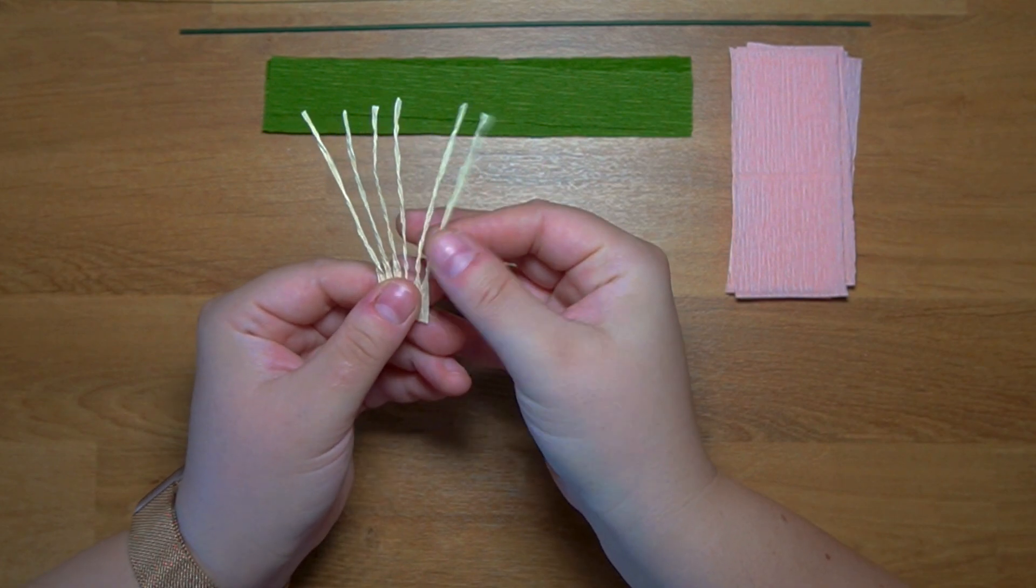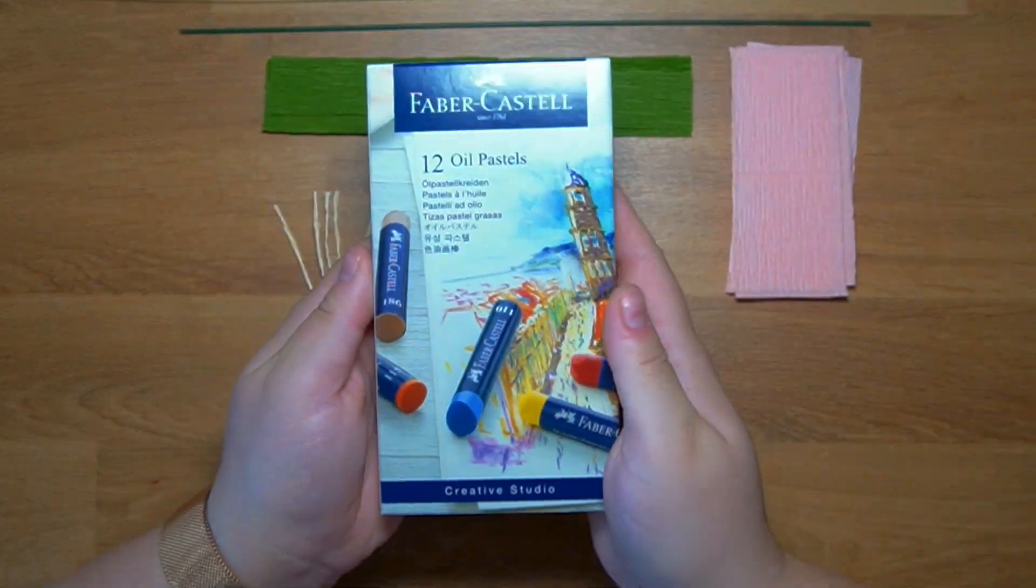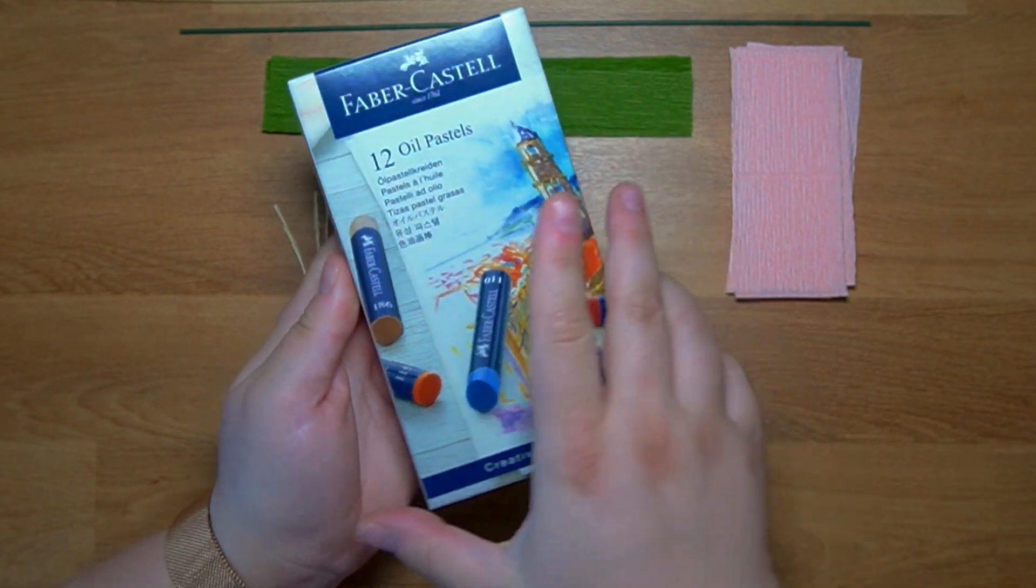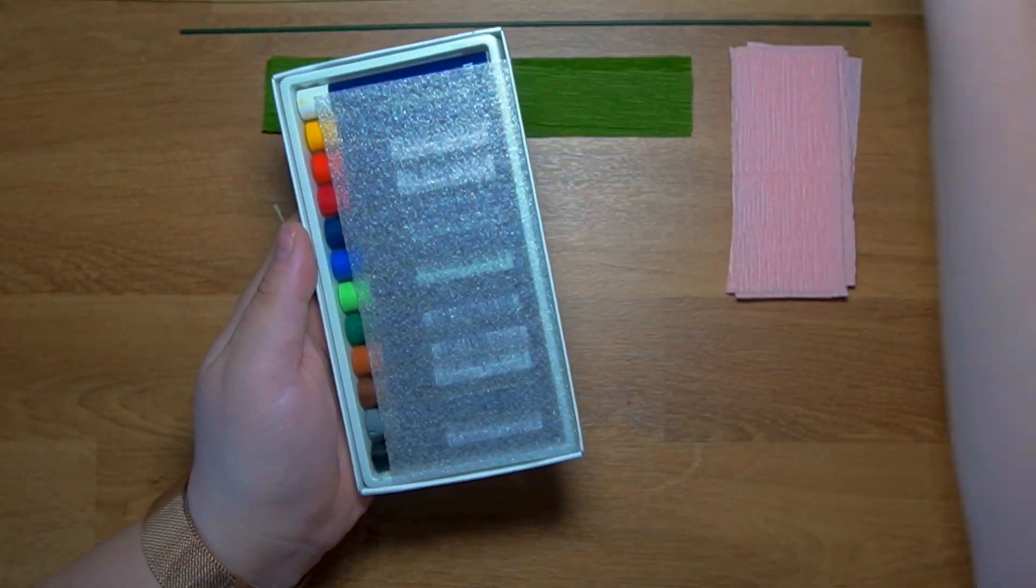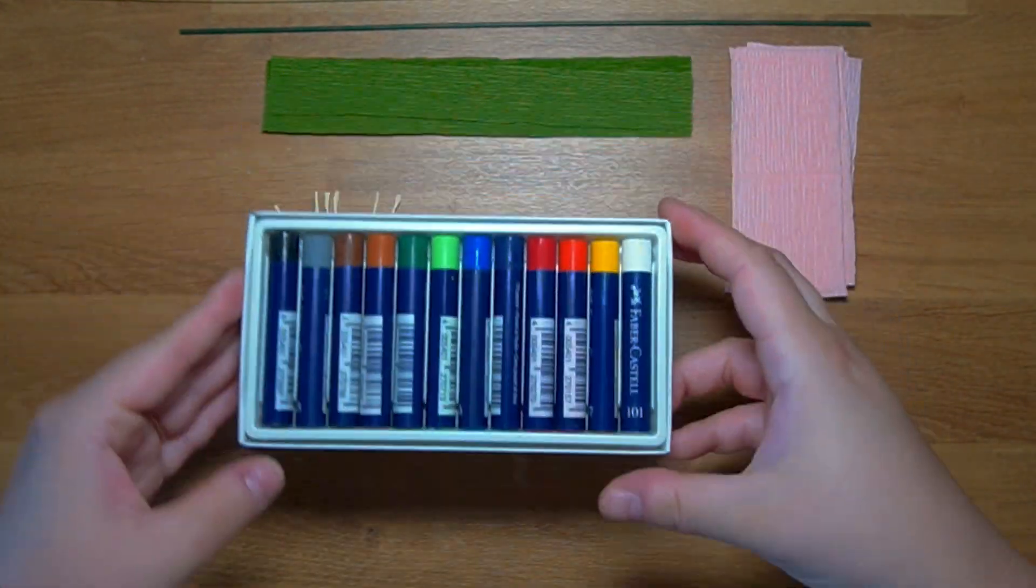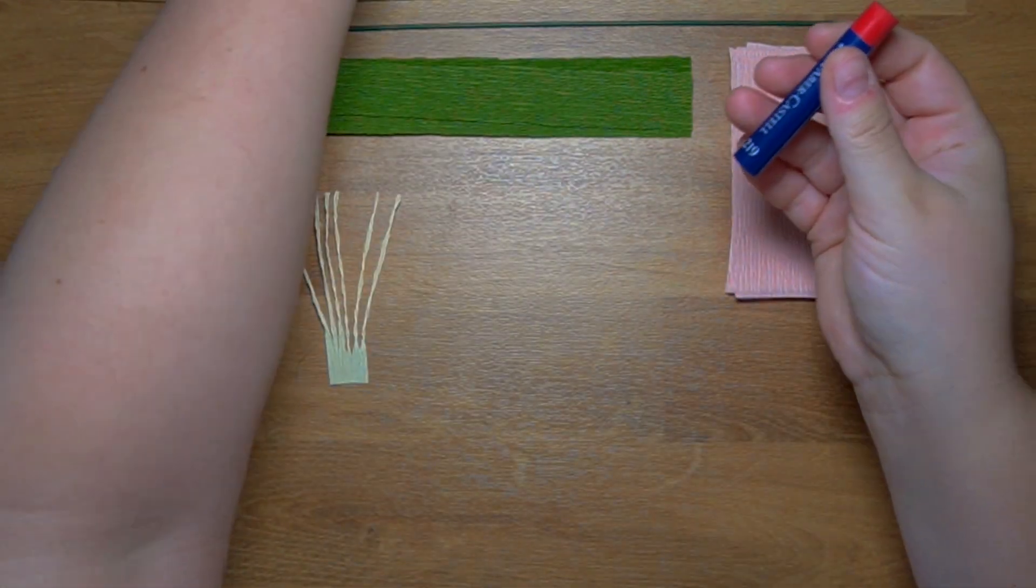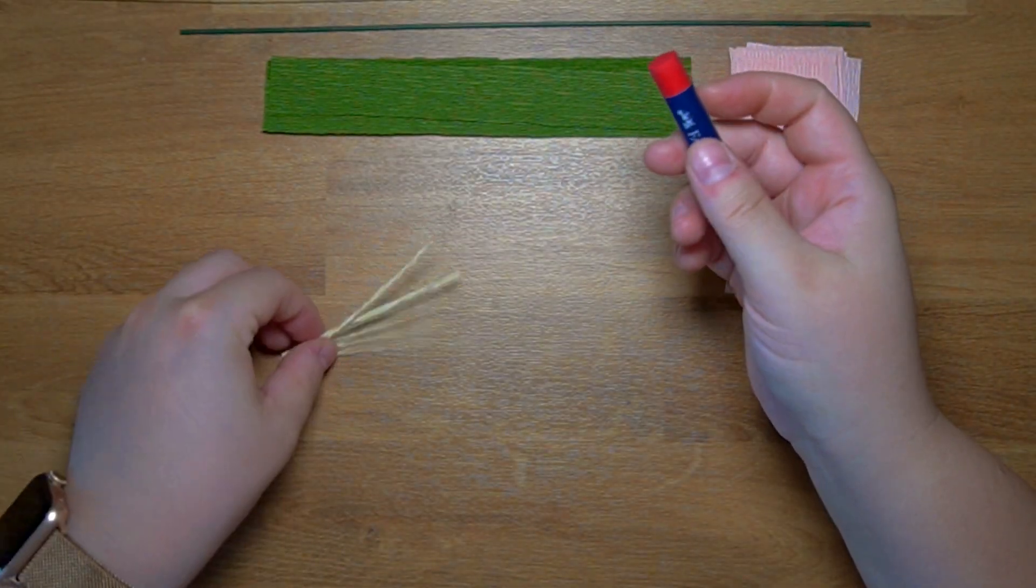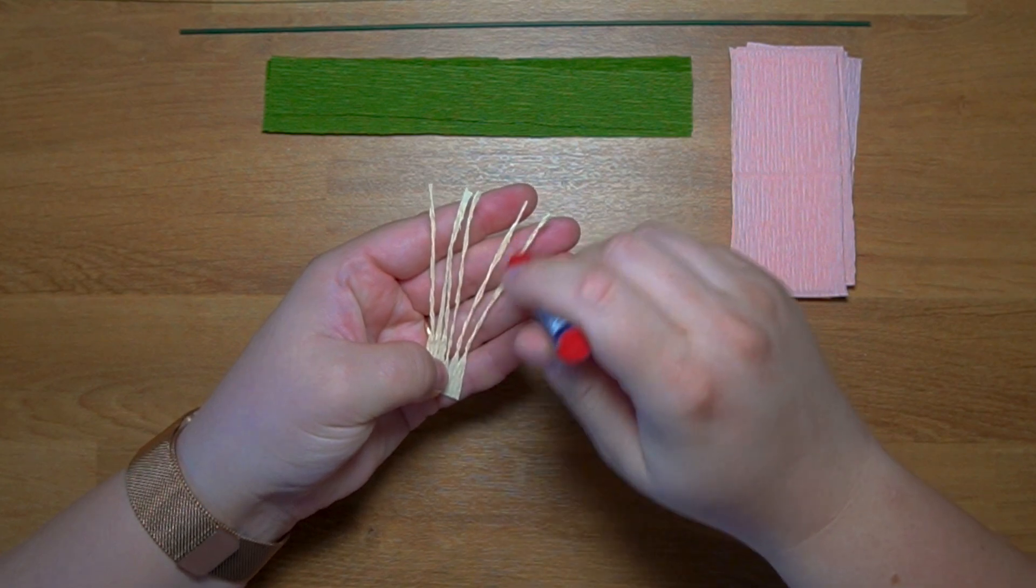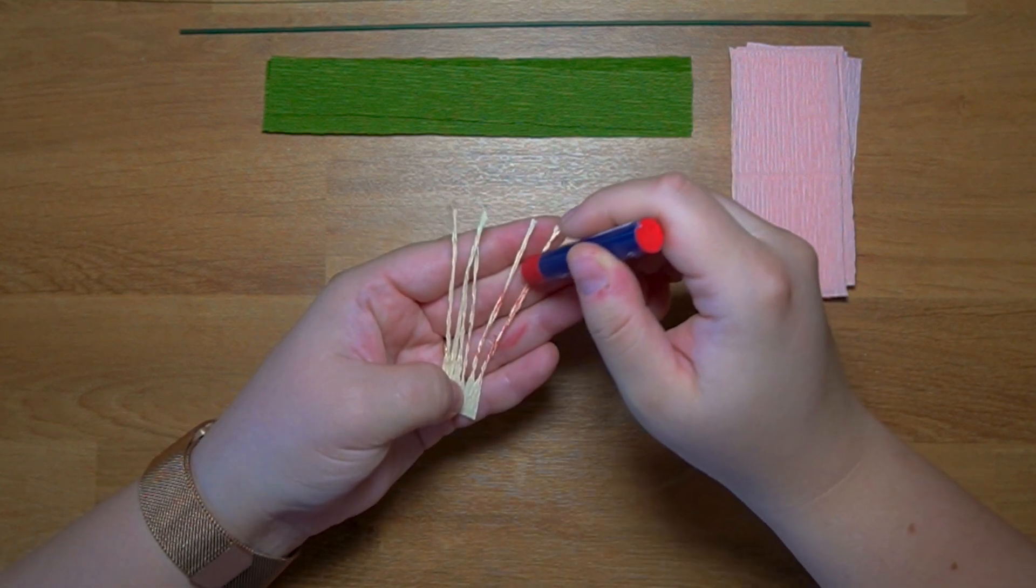And since in nature the stamens aren't just one color I've decided to also color them with some oil pastels in red. If you don't have oil pastels you can use even Crayola I think because all you need actually is just a bit of color to make them not look so uniform.